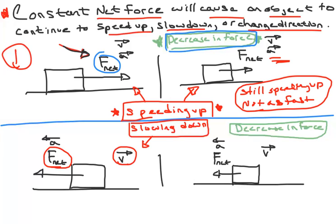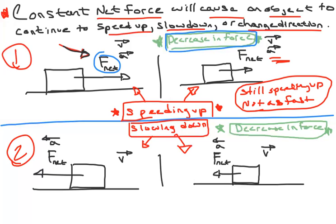When net force is opposite the direction we're moving, the object is slowing down. If that opposing net force then decreases, we're still continuing to slow down — both situations still have the object slowing down, just not as fast. The force decreased but didn't change direction.